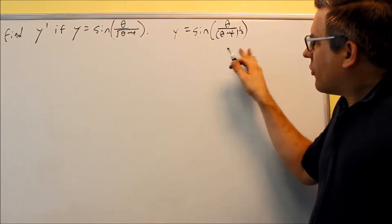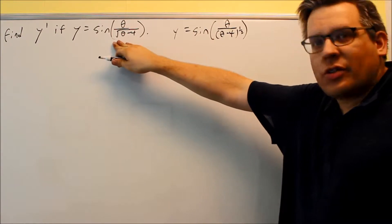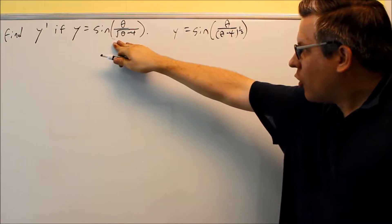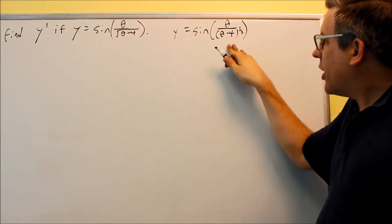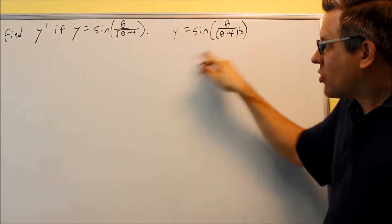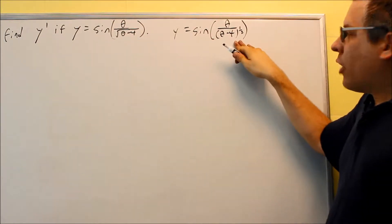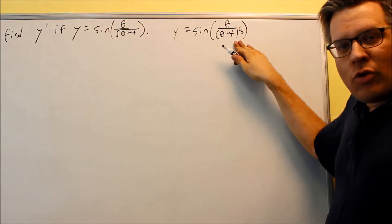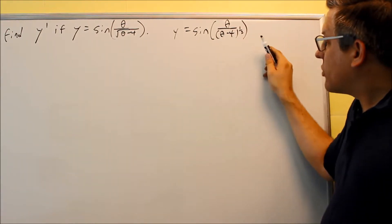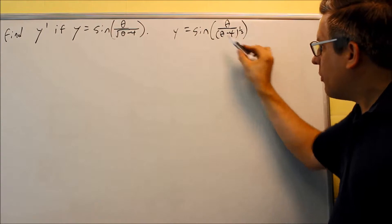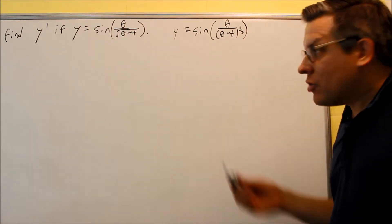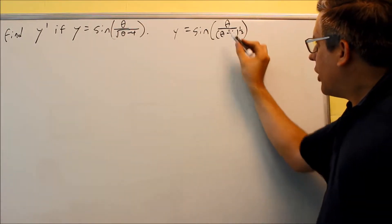The original problem was written as theta over the square root of theta minus 4. I've rewritten it with a one-half power in the bottom because it'll make it easier. Sooner or later I'll have to take the derivative of the bottom, and when I do, that's going to involve the chain rule.